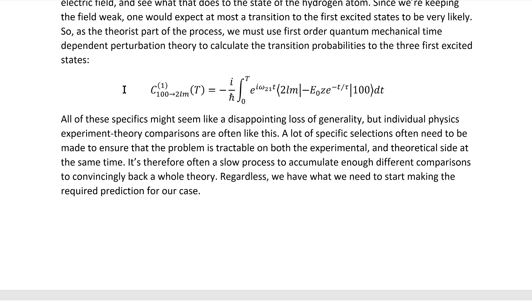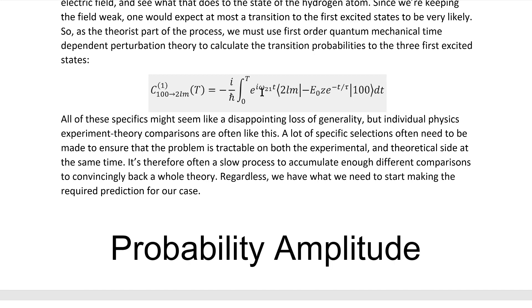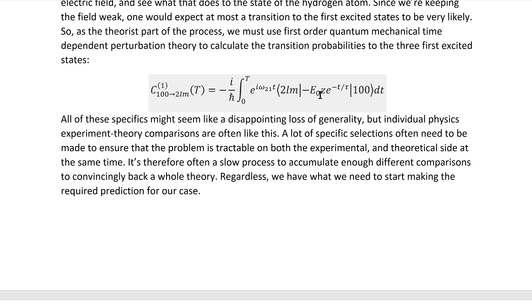As I noted right here, quantum mechanical time-dependent first order perturbation theory gives us this expression for the transition probability from one state to another, and it's therefore this integral and the matrix element inside it, or more specifically the limit as capital T goes to infinity of it, that we need to evaluate to get the information that we need.